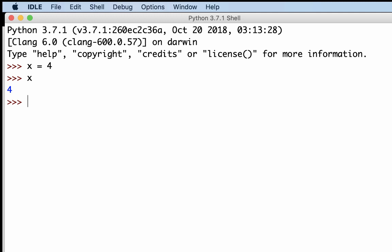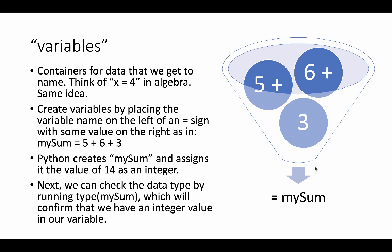If I type mySum equals 5 plus 6 plus 3 and then I type mySum, I can see that indeed mySum has the value of 14. So variables are convenient that way—they allow us to create a named container that holds some kind of data for us that we can then use in a variety of ways.